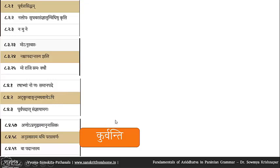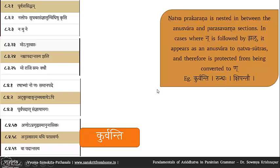Panini is not doing this for just one form — there are hundreds of forms where such a problem would arise, and all are protected because of this. The natva prakarana from 8.4.1 till 8.4.38-39 is nested in between the anuswara sutra and the parasavarana sutra. Panini has also deliberately not placed the anuswara and parasavarana sutras next to each other in the Ashtadhyayi, even though in sandhi practice we always do parasavarana immediately after anuswara.